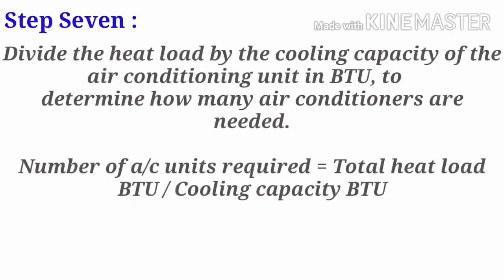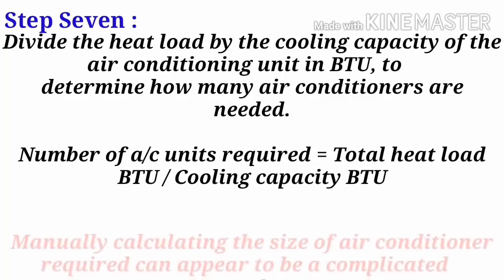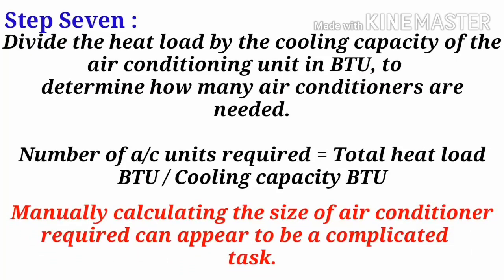Step 7: Divide the heat load by the cooling capacity of the air conditioning unit in BTU to determine how many air conditioners are needed. Number of AC units required equals Total Heat Load (BTU) divided by Cooling Capacity (BTU). Manually calculating the size of air conditioner required can appear to be a complicated task, but in this way you choose the required cooling capacity unit by calculating the heat load.